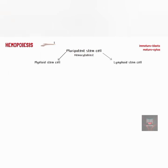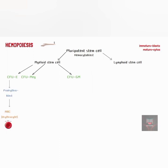The myeloid stem cells may form colony-forming units. These include colony-forming unit E, colony-forming unit MEG, and colony-forming unit GM. The colony-forming unit E produces proerythroblasts, which develop into mature erythrocytes, i.e., the red blood cells. The colony-forming unit MEG forms megakaryoblasts, which develop into mature megakaryocytes or platelets.